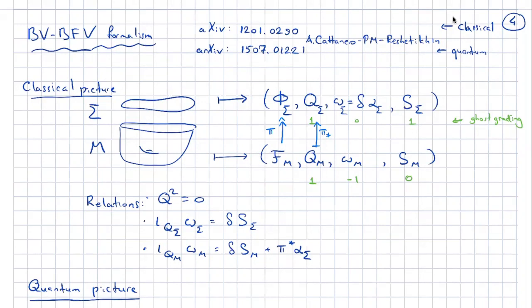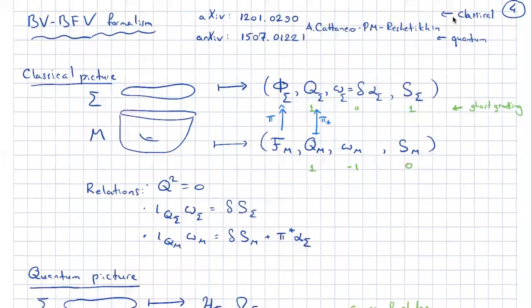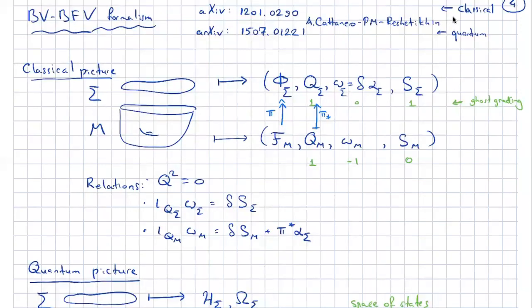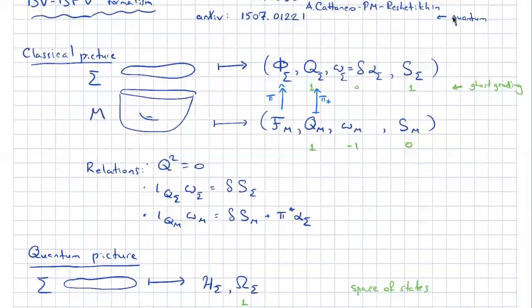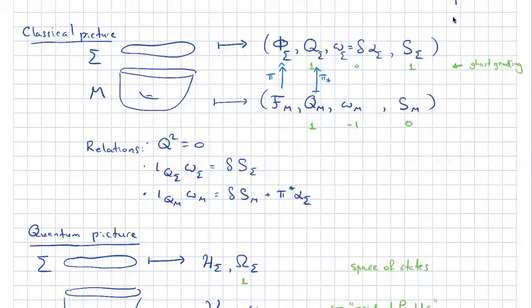The BV-BFV formalism is something I thought about with my collaborators Alberto Catania and Nikolai Reshetikhin. The idea is to put together Batalin-Vilkovisky formalism with the idea of cutting and gluing — a lot, in the sense of Atiyah and Segal. This is a point of view on gauge theories, and you can adopt it and just look at gauge theories through this prism.